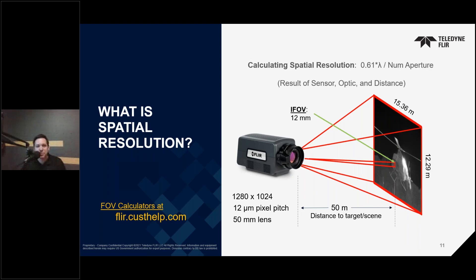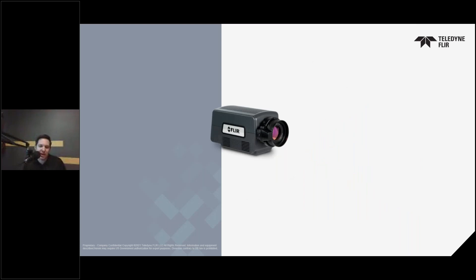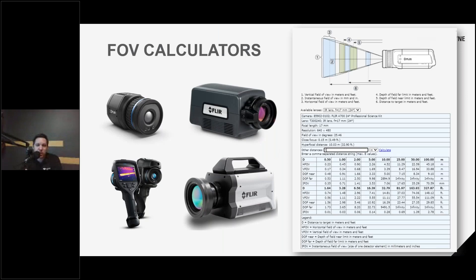I'd like to briefly show our field of view calculators. These are located in the FLIR Technical Support Center website at flir.custhelp.com and are provided for every commercially available camera we currently sell. You simply select the camera, then select the specific lens from a pull-down, enter the expected working distance, click calculate, and you get your results. The tool outputs a table of the resulting horizontal and vertical field of views, along with the IFOV or spatial resolution at the given distance in both imperial and metric units.